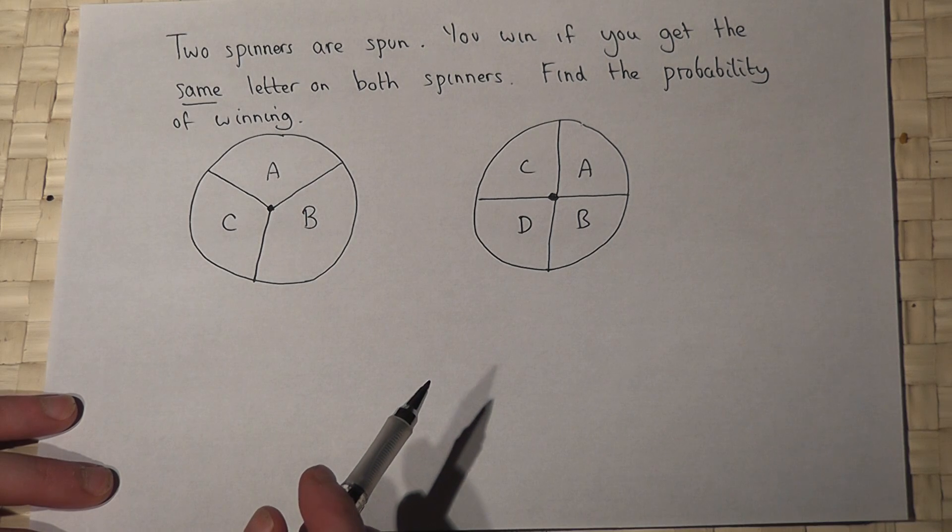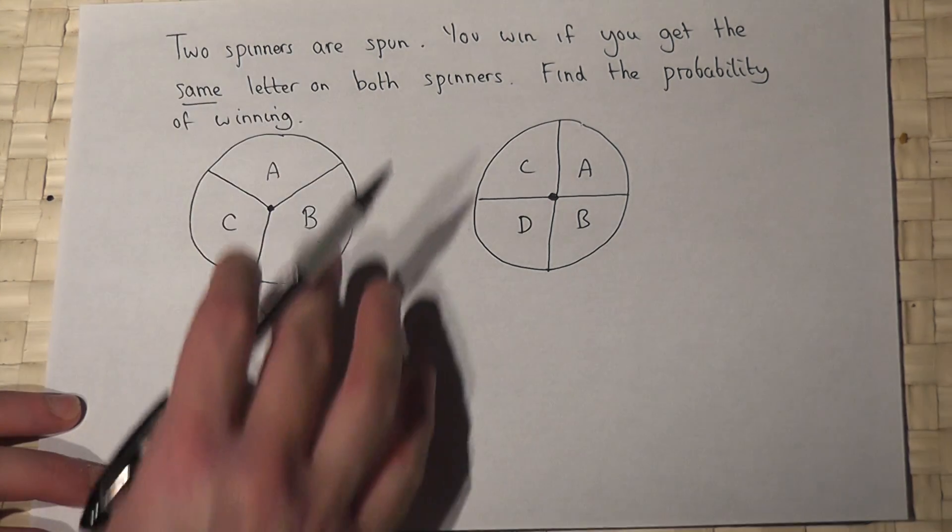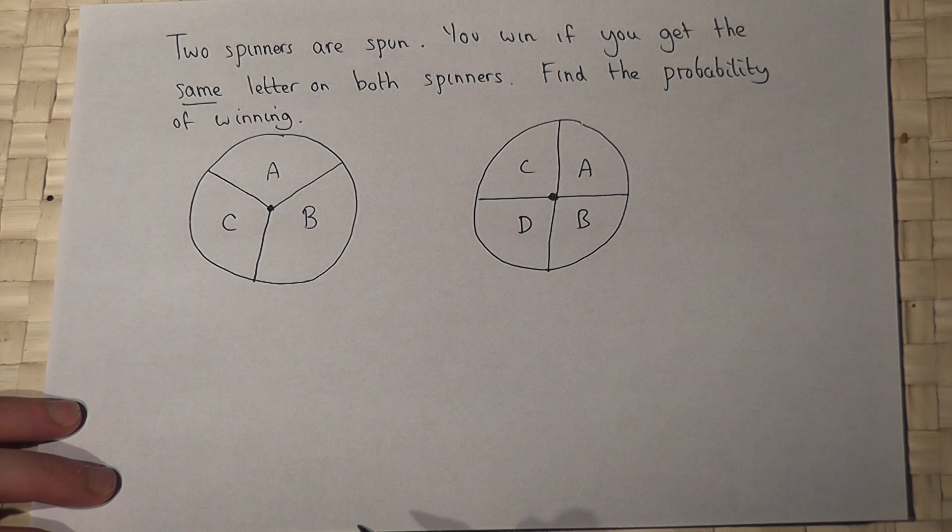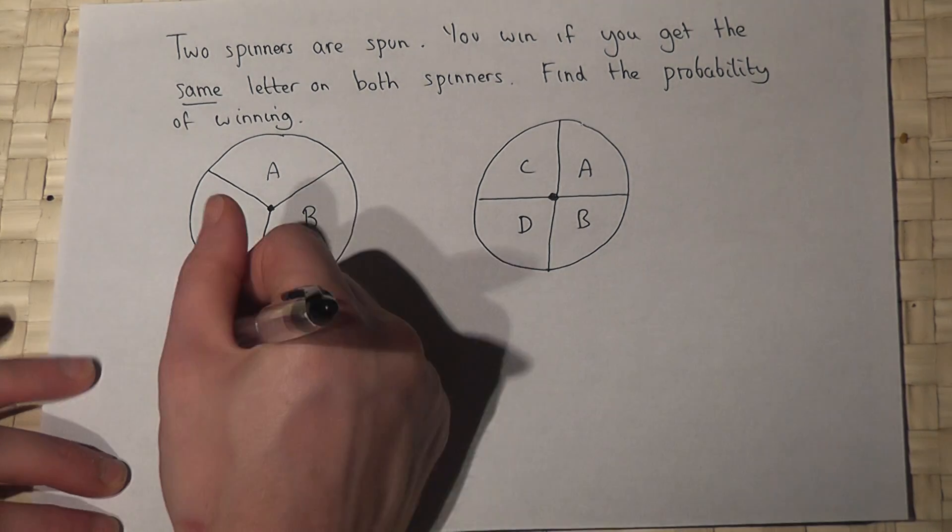Now to approach this sort of problem where they're unbiased, fair spinners, then the best way probably is using what's called a table method. So I draw the table.